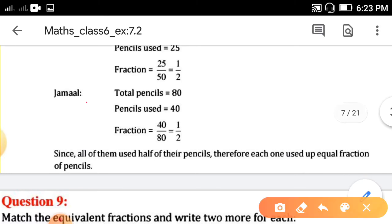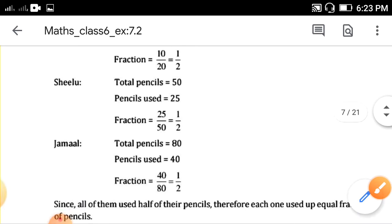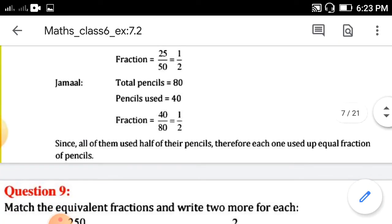For Jamaal, total pencils 80 and used 40. So, fraction is 40 upon 80. So, it is 1 upon 2. So, fraction is 1 upon 2 for all 3 students. You can see all of them used half of their pencils. Therefore, each one used up equal fraction of pencils.